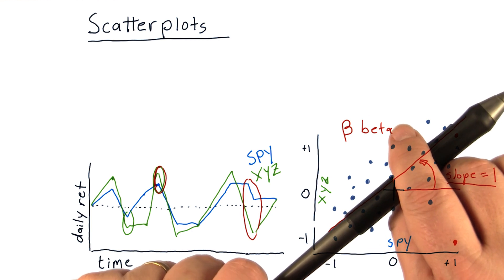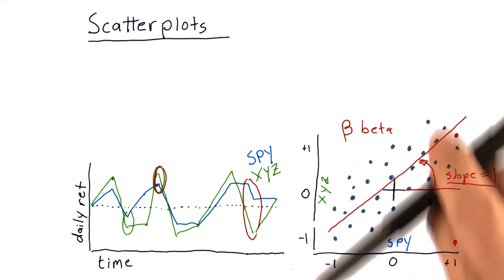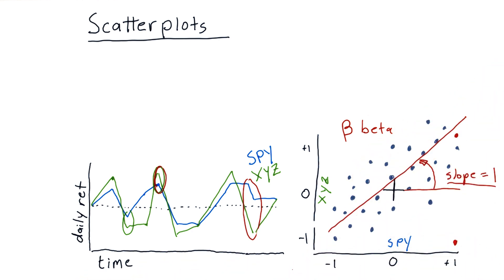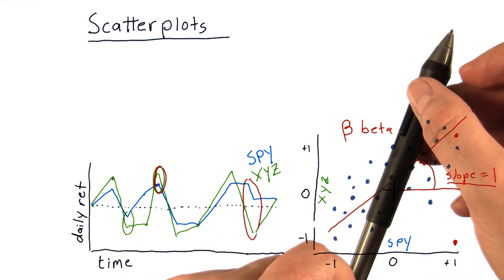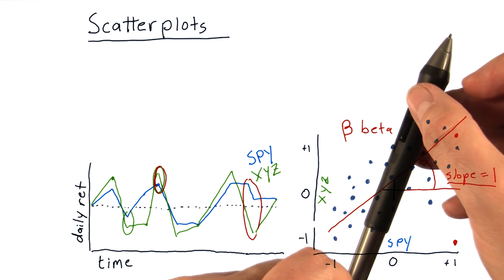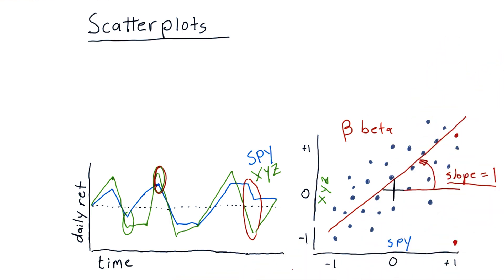So if beta is one, and we have a slope here of one, it means on average when the market goes up 1%, that particular stock also goes up 1%. If we have, say, a higher number, say 2, that would mean that if the market were to go up 1%, we'd expect on average for that stock to go up 2%.